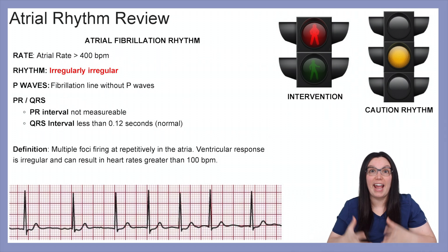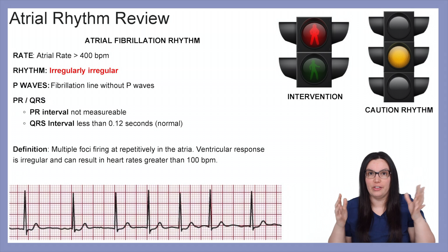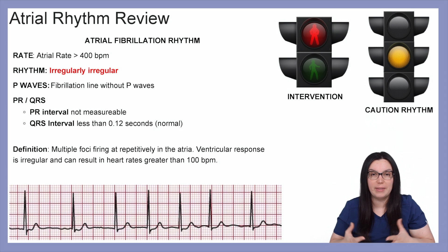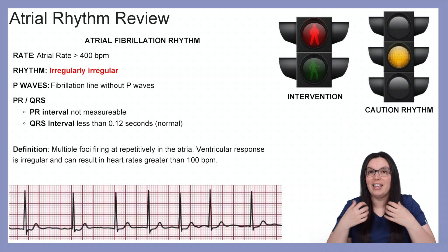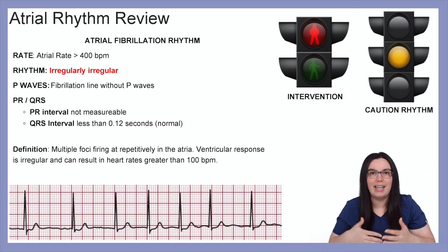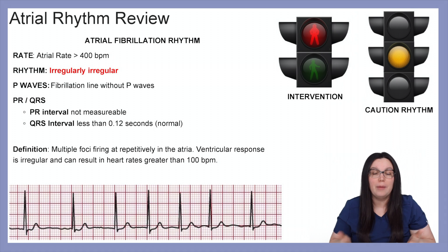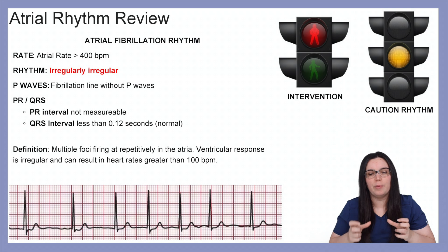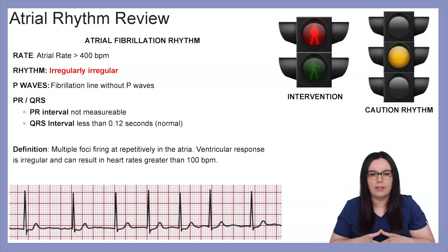Now let's look at atrial fibrillation — the atria are just fibrillating and not functioning appropriately. The atrial rate is greater than 400 beats per minute and the rhythm is irregularly irregular. The P waves are hidden in the fibrillation and will not be visible; the PR interval is not measurable, but the QRS complexes should still be normal at less than 0.12 seconds. The definition is multiple foci firing at repetitive intervals within the atria, and the ventricular response is irregular and can cause the heart rate to be greater than 100 beats per minute.